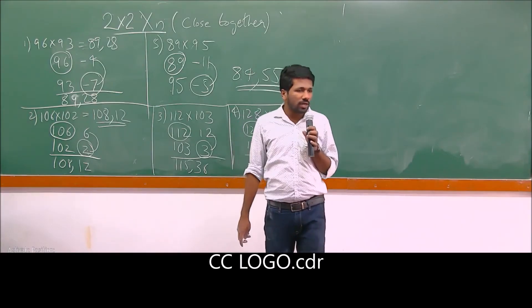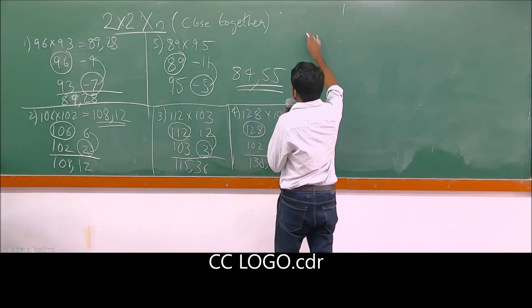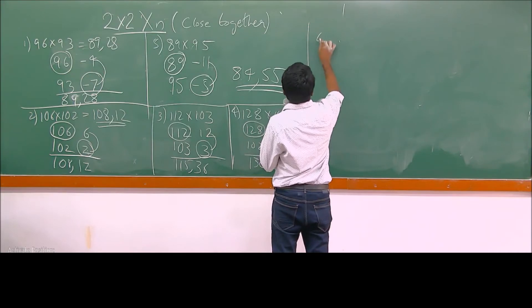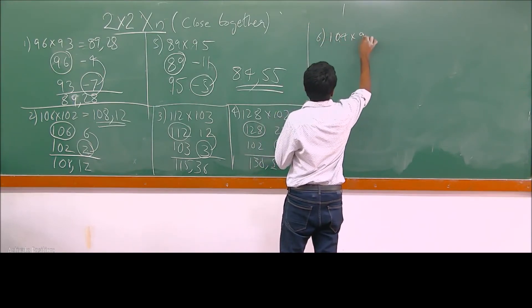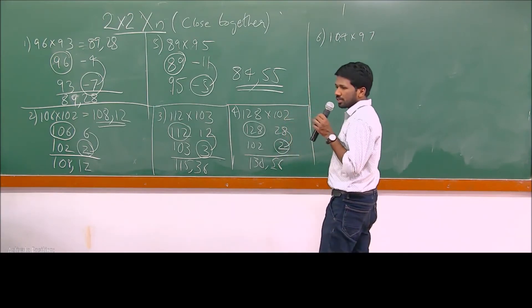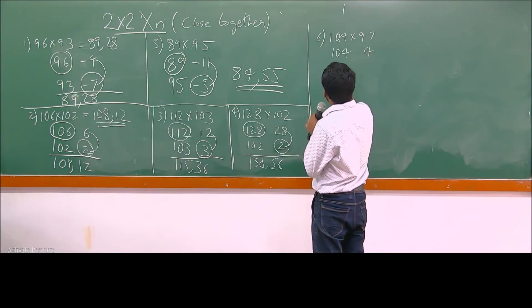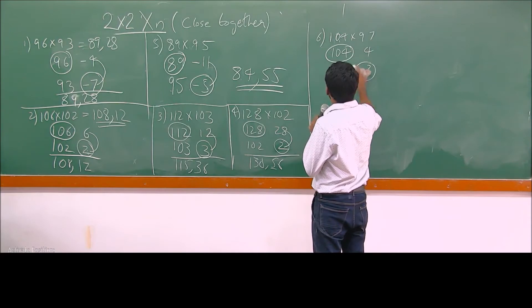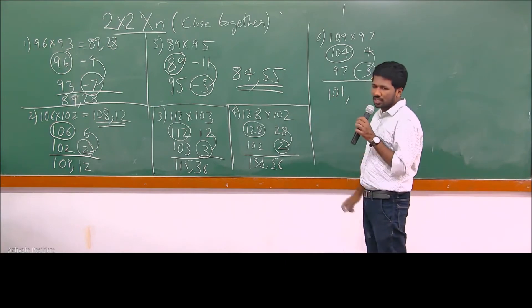If one number is below 100 and one number is above 100, there is a small issue. For example, 104 into 97. Do the same steps: 104 is 4 away, 97 is minus 3 away. So 104 plus minus 3 is 101 — that part is okay. But now 4 into minus 3 is minus 12.